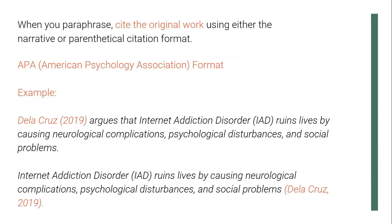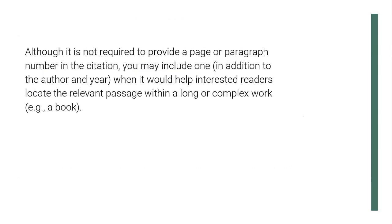When you paraphrase, cite the original work using either the narrative or parenthetical citation format. We have APA — American Psychological Association — format. For example, narrative citation: 'De La Cruz (2019) argues that Internet Addiction Disorder, or IAD, ruins lives by causing neurological complications, psychological disturbances, and social problems.' Or parenthetical citation: 'Internet Addiction Disorder, or IAD, ruins lives by causing neurological complications, psychological disturbances, and social problems (De La Cruz, 2019).' Although it is not required to provide a page or paragraph number in the citation, you may include one in addition to the author and year when it would help interested readers locate the relevant passage within a long or complex work, such as a book.